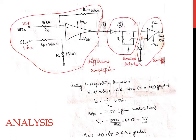The modulated signal is represented by Vin1 and the carrier signal is represented by Vin2. Using the superposition theorem, Vout1 is obtained by applying the modulated BPSK signal and grounding Vin2 which is C(t). In such a case, the circuit appears to be an inverting amplifier circuit and the output voltage Vout1 equals minus 30 kΩ divided by 15 kΩ multiplied by minus 1.5 volts, which equals 3 volts.